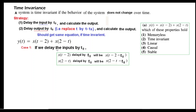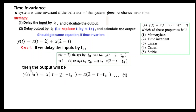In Case 1, we delay the input by t0: x(t-2) delayed by t0 becomes x(t-2-t0), and the second term becomes x(2-t-t0). Substituting into the output equation gives y(t, t0) = x(t-2-t0) + x(2-t-t0). This is equation 1.